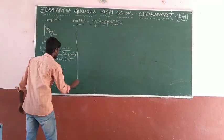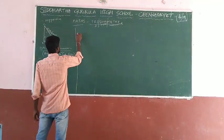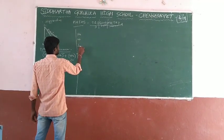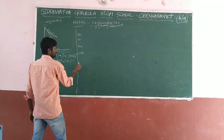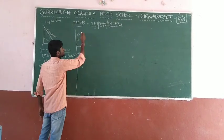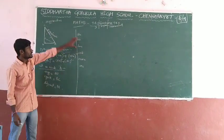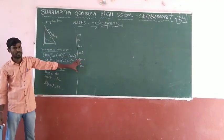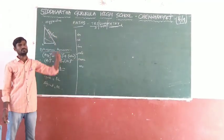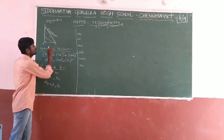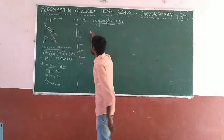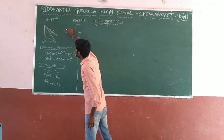The six trigonometric ratios are sin, cos, tan, cot, cosec, and sec. Among these six, three are major and three are minor. The three minor ones are reciprocals of the major ones. At an acute angle A, if we assume the angle as theta, we denote theta to measure the angle.